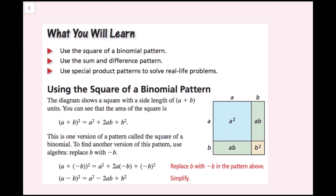This is one version of a pattern called the square of a binomial. To find the other version of this pattern, use algebra — replace b with negative b. So here I have a plus negative b, which is the same thing as a minus b, and then if I square that entire quantity, I have a squared plus 2a times negative b plus negative b quantity squared. And this simplifies to a squared minus 2ab plus b squared.